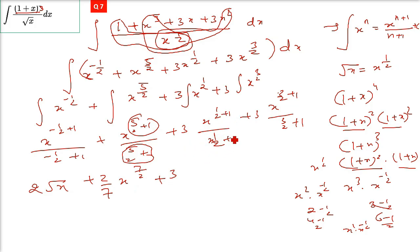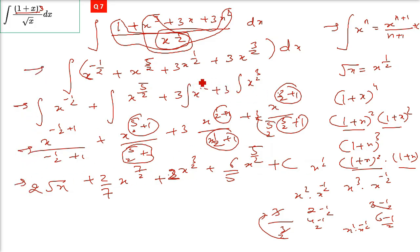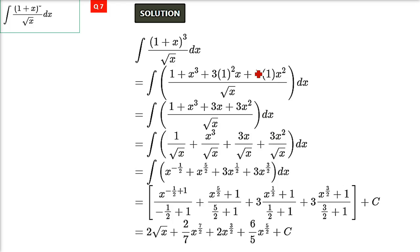For x raised half plus 1, it will be x raised 3 by 2, and half plus 1 is 3 by 2 — when it goes up it will be 2 by 3, and 3 gets cancelled, so you get 2 in the numerator with x raised 3 by 2. Here also 3 by 2 plus 1 is 5 by 2 — so 2 goes up and 5 goes down, giving x raised 5 by 2. These are all the steps to achieve the final answer, with the constant of integration.